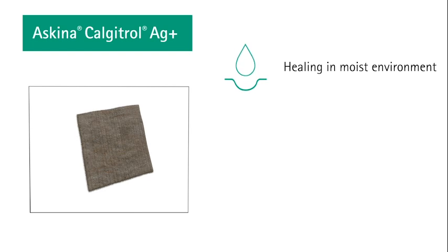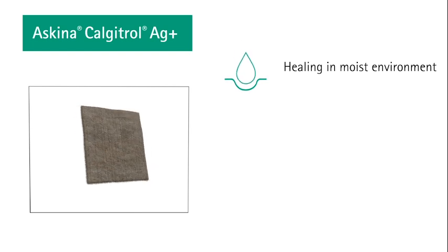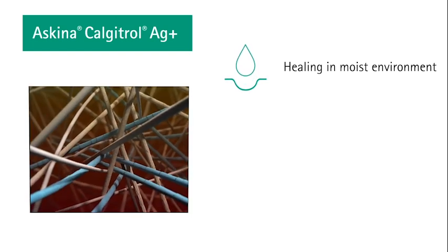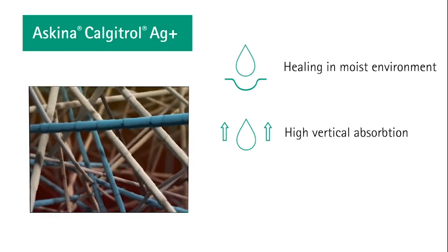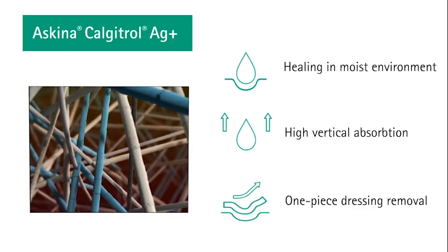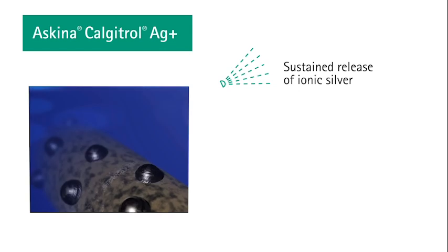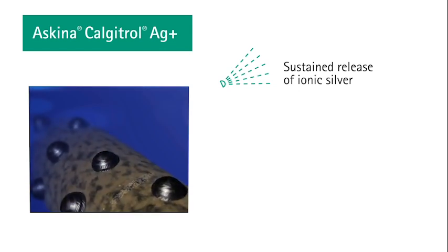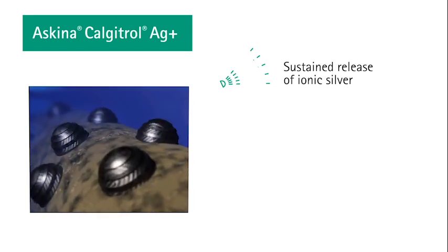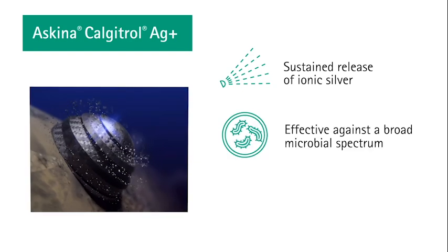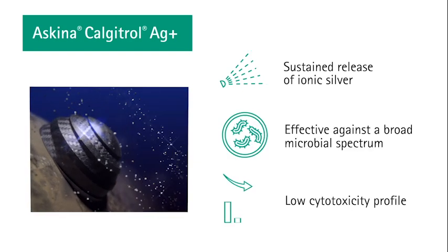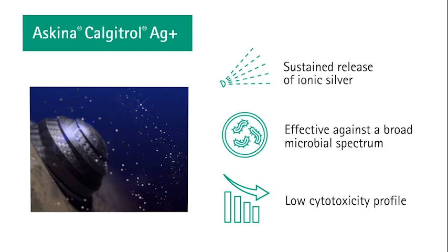Askina Calcitrol AG+ promotes wound healing in a moist environment. Its reinforced fiber structure provides high vertical absorption with low shrinkage and facilitates dressing removal in one piece. The sustained release of silver ions from encapsulated nanoparticles makes it effective against a broad microbial spectrum while maintaining a low cytotoxicity profile.